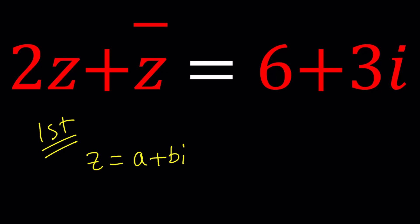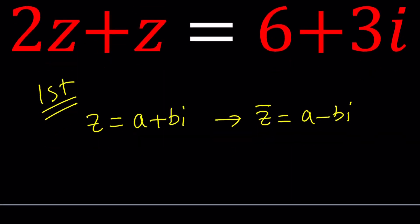So now if Z is a plus bi then Z bar which is the conjugate of Z is a minus bi. As you know, you get the conjugate by changing the imaginary part only. So now let's go ahead and plug it in.